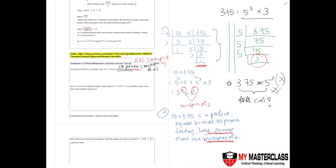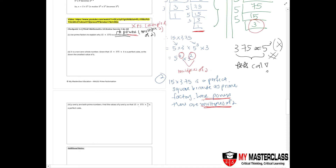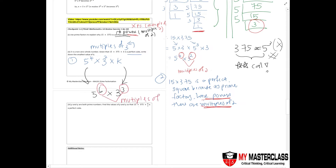Part 2 asks you to find k such that 15 times 375 times k is a perfect cube. Use the result from before: 5 to the power of 4 times 3 to the power of 2, multiplied by k. A perfect cube means all powers must be multiples of 3. So the target is 5 to the power of 6 times 3 to the power of 3, since both 6 and 3 are multiples of 3.